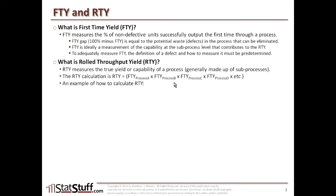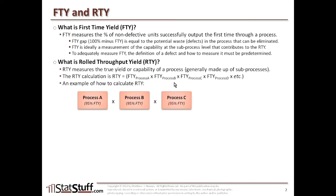Let me show you an example of how this calculation works. Let's presume that we have four sub-processes. Process A has a first-time yield of 95%, which sounds pretty good. Then process B also has a first-time yield of 95%. Plus we have process C and process D — four different processes, each of them having a 95% first-time yield.